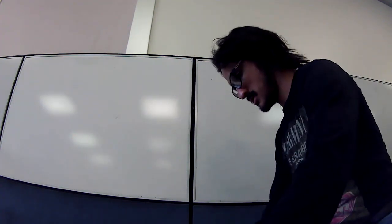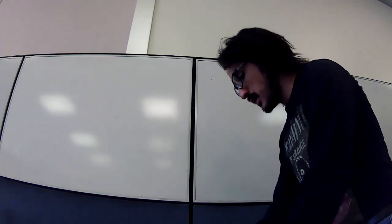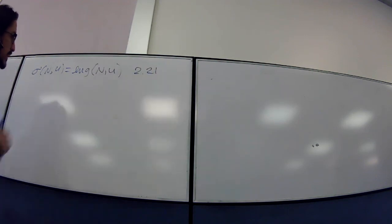Last time we stopped at the definition of entropy. This is equation 2.21 in Kittel and Cromer.